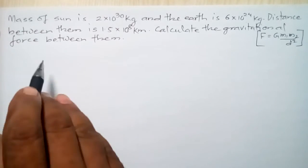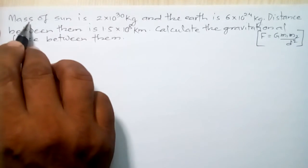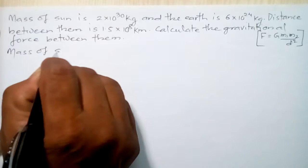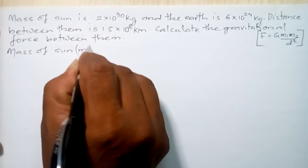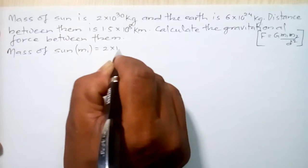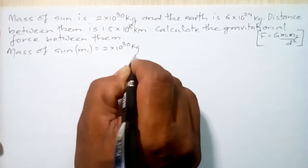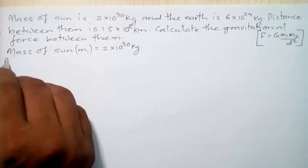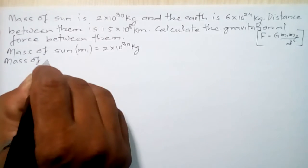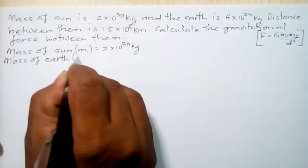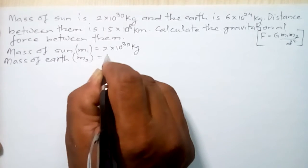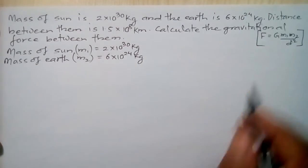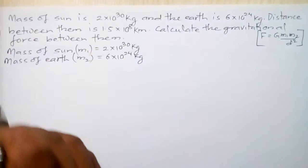First we have to write the information given in the numerical problem. The mass of the Sun is the first information, denoted by m1, which is equal to 2 into 10 to the power 30 kilograms. The mass of the Earth is also given, denoted by m2, which is equal to 6 into 10 to the power 24 kilograms. The distance between the Sun and Earth is 1.5 into 10 to the power 8 kilometers.